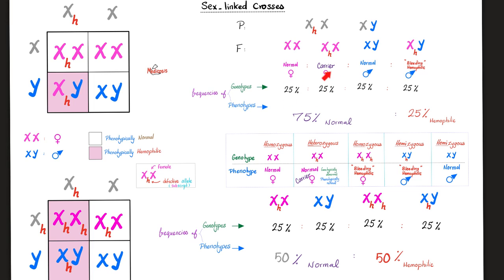25% normal females, 25% carrier females, who are genotypically abnormal but phenotypically normal. Next, 25% normal doofuses, and 25% bleeding doofuses.